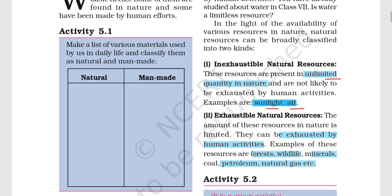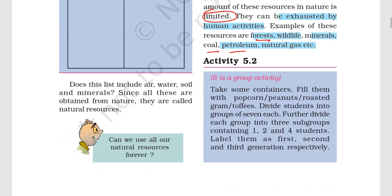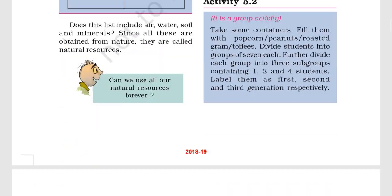Exhaustible resources are such resources which are limited. The amount of these resources is very limited, so they can be exhausted by human activities. Examples include forests — they are very limited, and if we don't renew them they will be finished — as well as wildlife, minerals, coal, petroleum, and natural gas. These are resources that will be finished with time.